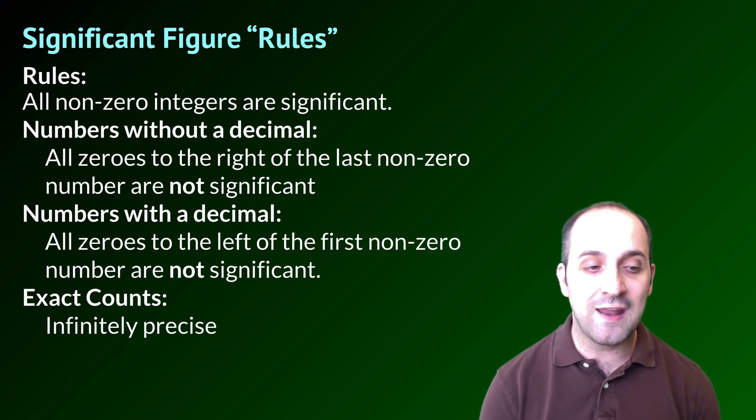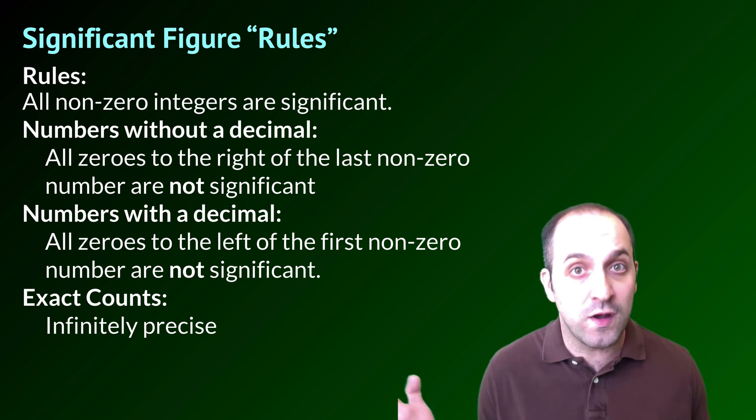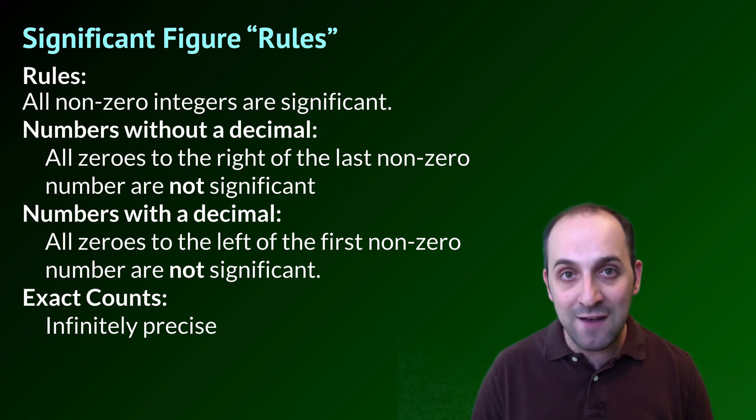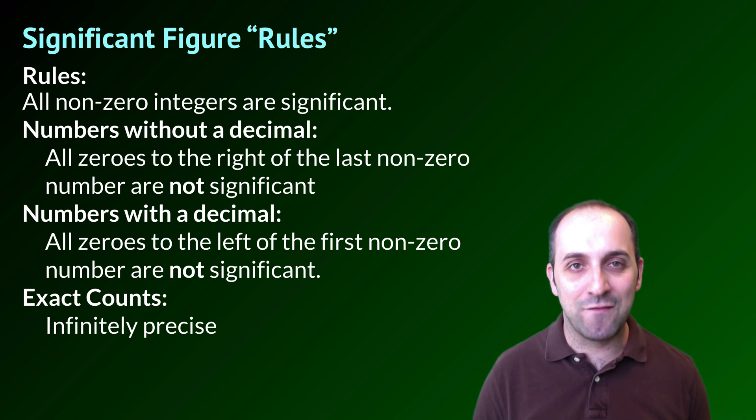The last thing that I'll point out is that exact counts of things, like 24 students in a class, are infinitely precise. They have an unlimited number of significant figures for the purpose of things like calculations.